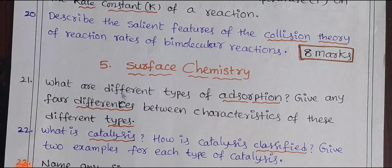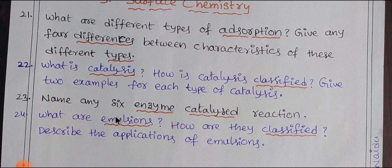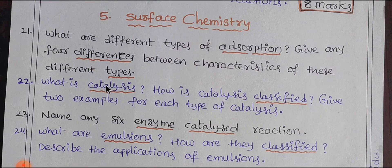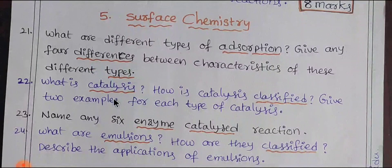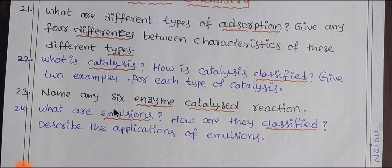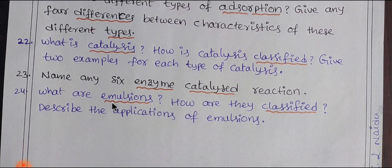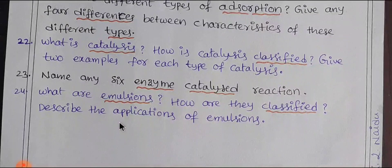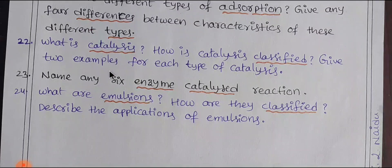Surface Chemistry is generally a 4-mark question. There are types of adsorption — physical adsorption and chemical adsorption — and their differences. What is catalysis and what are the classified types of catalysis? We have enzyme-catalysed reactions, and there are about 6 types of catalysis. What are emulsions and how are they classified? Classification includes two types: water-in-oil and oil-in-water. In catalysis, you have heterogeneous catalysis and homogeneous catalysis.